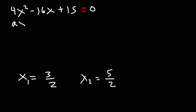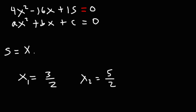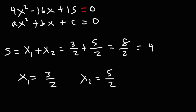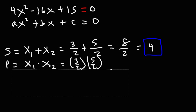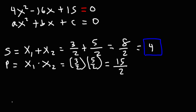This equation is in ax squared plus bx plus c form, but first let's calculate the sum and product directly from the roots. The sum is x1 plus x2: 3 over 2 plus 5 over 2 equals 8 over 2, which is 4. The product is x1 times x2: 3 over 2 times 5 over 2 equals 15 over 4.